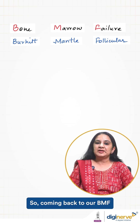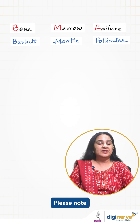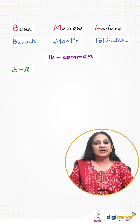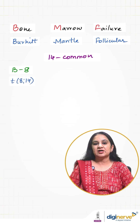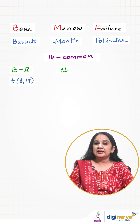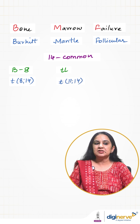Coming back to our BMF. Please note, the common number is 14. Burkitt's B looks like 8, so translocation 8 and the common number 14 — translocation t(8;14). Mantle's 'M' looks like 11, so translocation t(11;14).